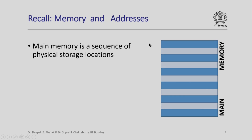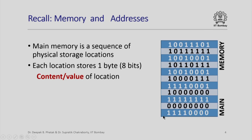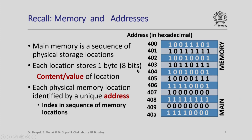Main memory can be thought of as a sequence of physical storage locations as is depicted here. Each of these locations stores one byte or eight bits as is shown here. Each horizontal rectangle can be thought of as one location of memory storing eight bits, and these eight bits will also be called the content or value of that location. Each physical memory location is also identified by a unique address, which can be thought of as the index of that memory location in the sequence of memory locations. For example, this particular location has an address 409 in hexadecimal and the content of that memory location is all zeroes.